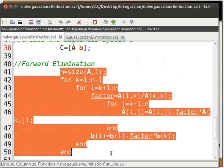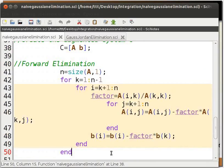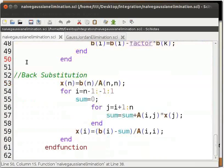The next block of code performs forward elimination. This code converts the augmented matrix to upper triangular matrix form. Finally, we perform back substitution.